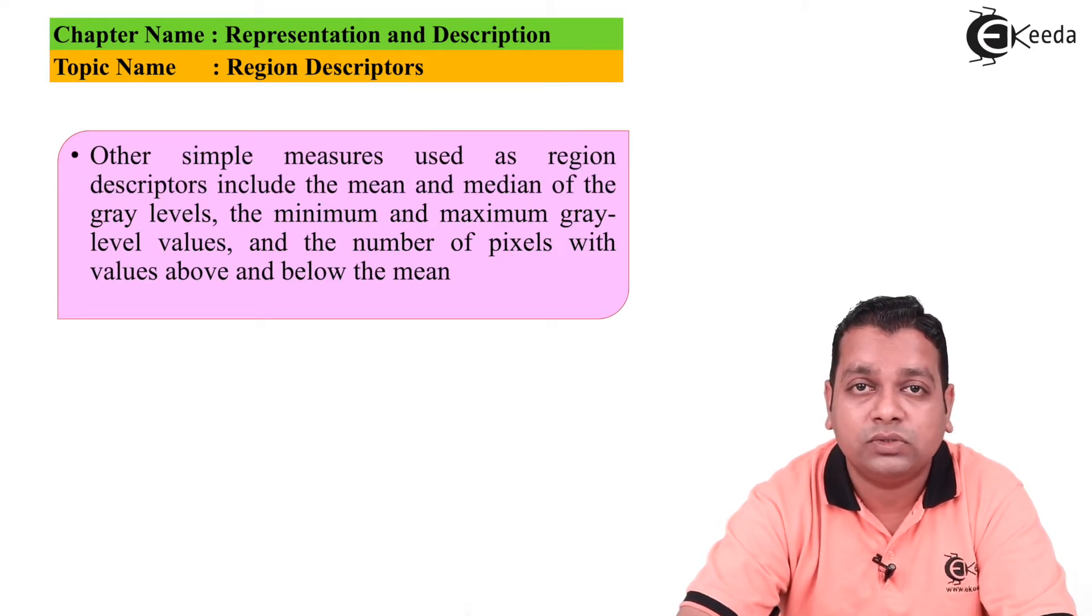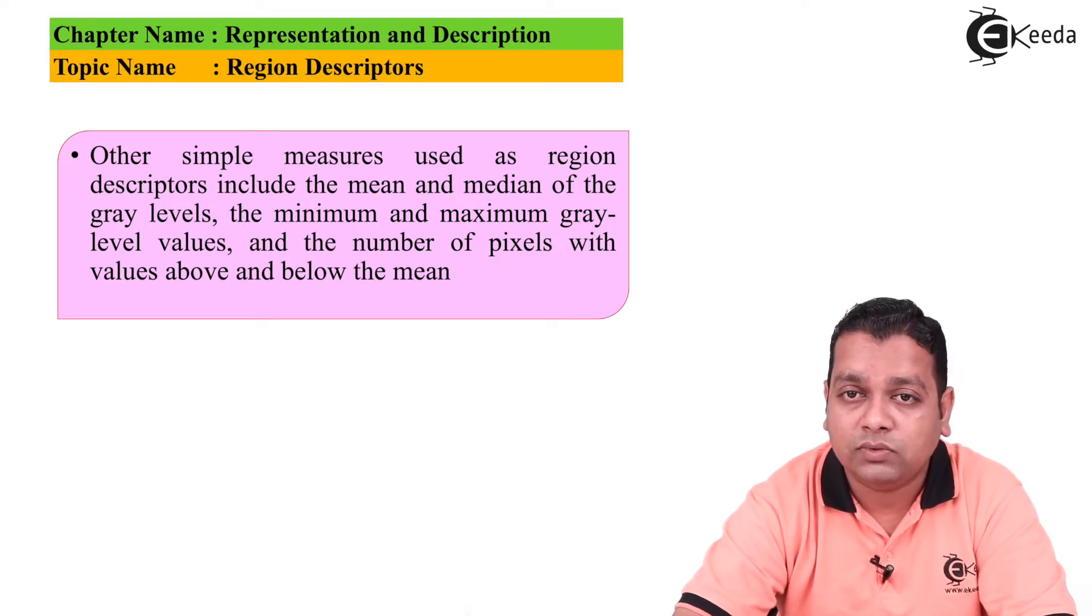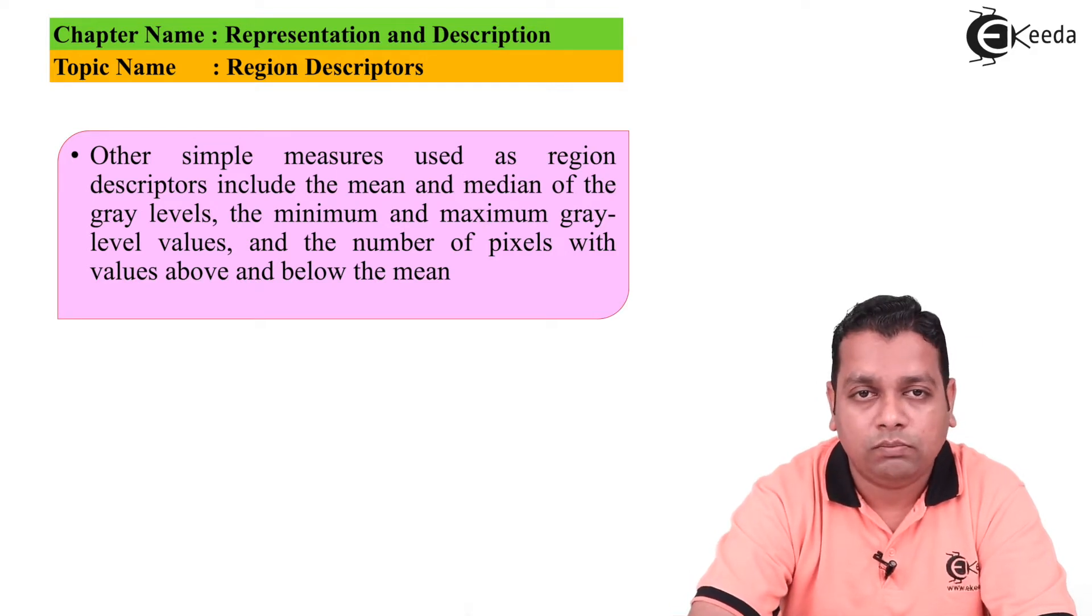Other simple measures that can be used as region descriptors include the mean and median of the gray levels, the minimum and maximum gray level values, and the number of pixels with values above and below the mean.